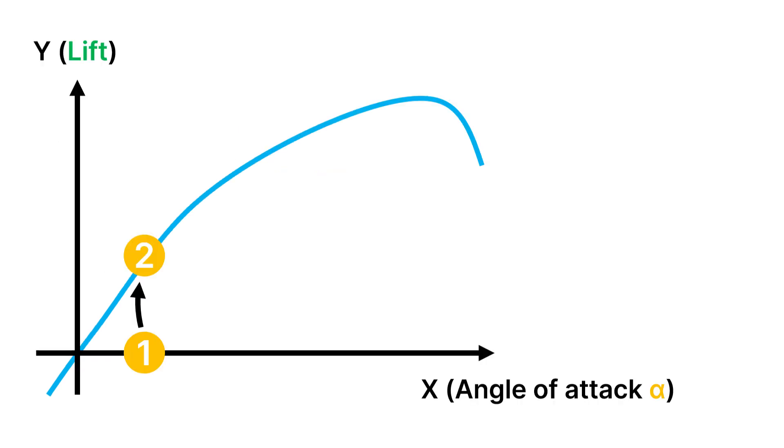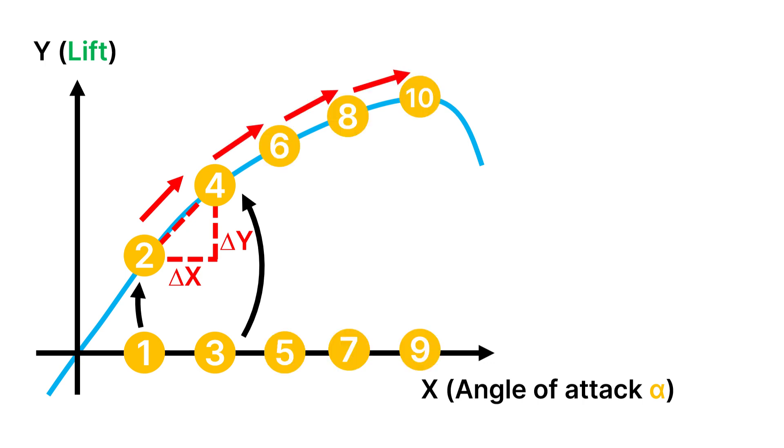To find the maximum lift value we can start by picking a random value for the angle of attack on the x-axis and calculate the corresponding lift value on the y-axis. We can then pick a second point close to it and do the same thing. With these two data points known, we can now calculate the local gradient, which indicates the direction in which we need to march to improve or increase the objective function, which is lift in this case. If you take enough of these steps, you will actually end up at the peak.